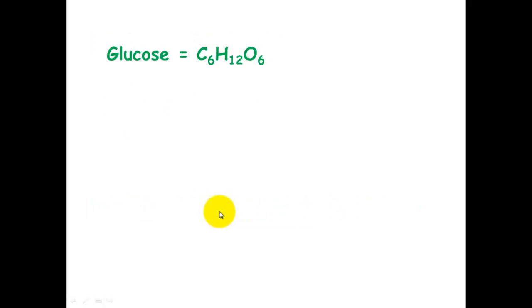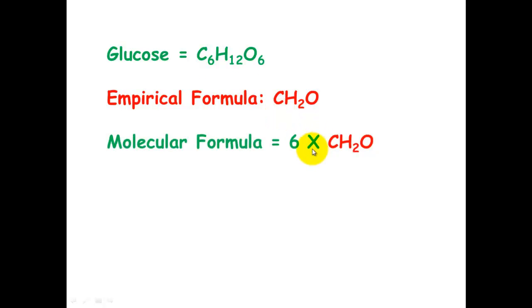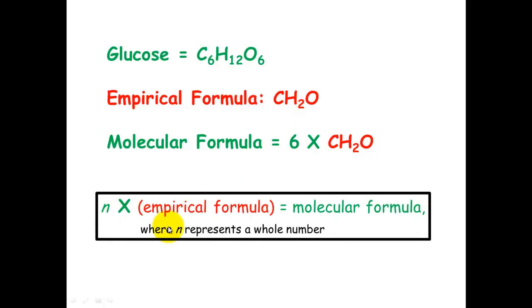Using glucose as an example again — its molecular formula is C₆H₁₂O₆ and its empirical formula is CH₂O, which is just dividing all of them by 6. Going back the opposite way, the molecular formula is its empirical formula multiplied by the whole number 6. So what we need to work out is what this whole number is.